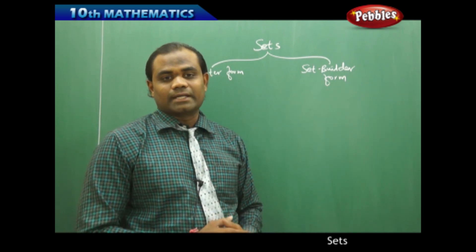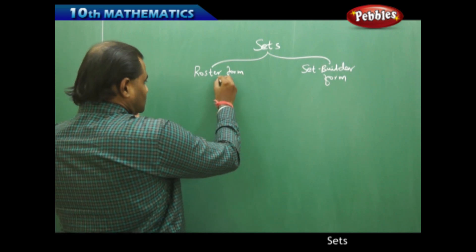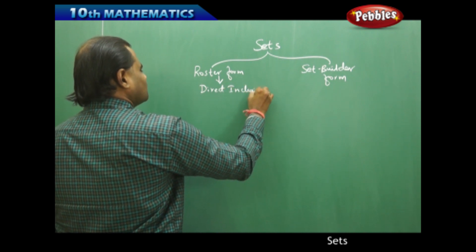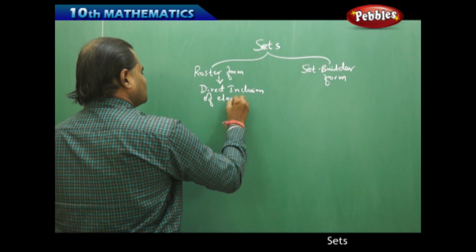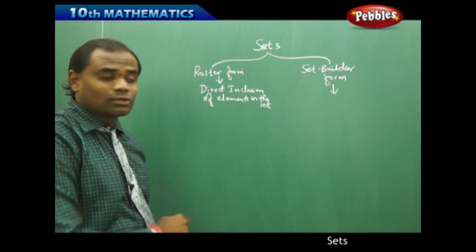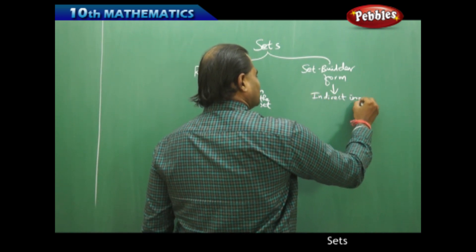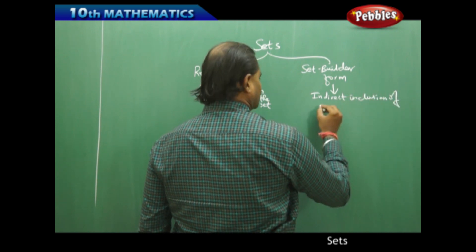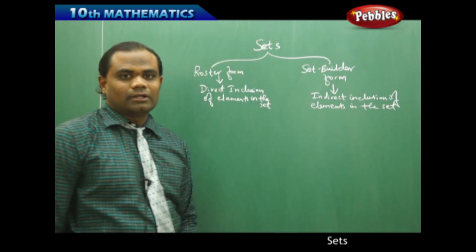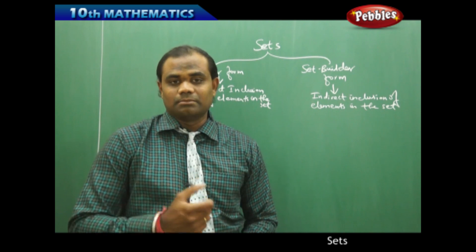So let's see further examples to understand roster and set builder form better. Roster form is the direct inclusion of elements in the set, while set builder form is the indirect inclusion of elements in the set. Let me take one particular example which can be written both in roster form and set builder form.